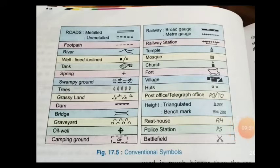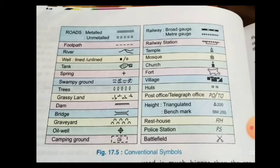As you can see in the picture, conventional symbols include: road, footpath, river, well (lined and unlined), tank, spring, swampy ground, trees, grassy land, dam, bridge, graveyard, oil well, camping ground, railway (broad gauge and metre gauge), railway station, temple, church, post office, telegraph office, triangulated benchmark, rest house, police station, and battlefield. Conventional symbols are very important in map making as they make drawing a map much quicker and easier, and also help laypeople to read the map easily.